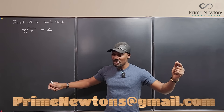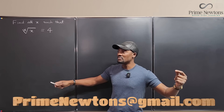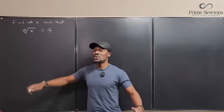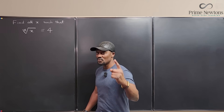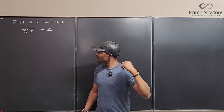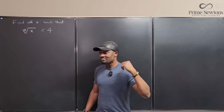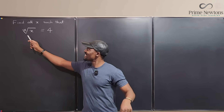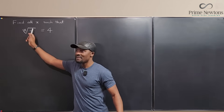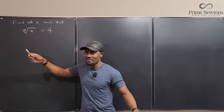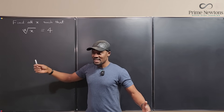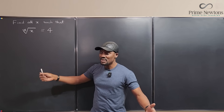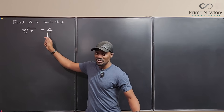Now, a long time ago I did a limit problem finding the limit of the x-th root of x as x approaches infinity, and the answer was 1. And I know that the limit as x approaches 0 of this same function is 0. So what exactly would x be if the value of this function is 4?